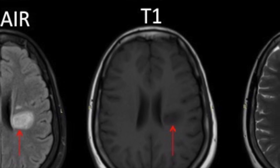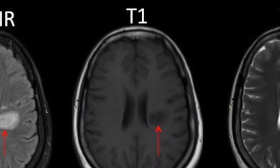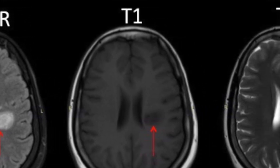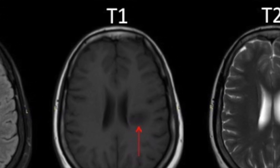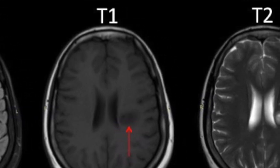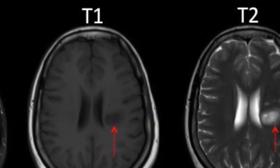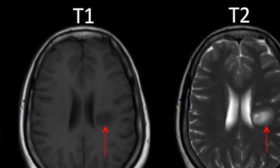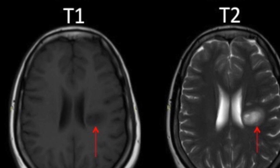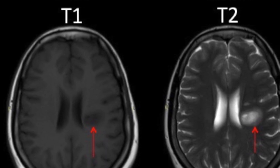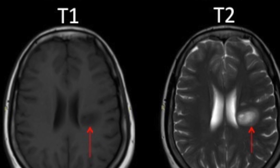In addition to this lesion, there were few other discrete hyper-intense foci within the periventricular and subcortical white matter bilaterally on FLAIR and T2-weighted images. This large periventricular white matter lesion did not show any significant perilesional edema or any significant mass effect.